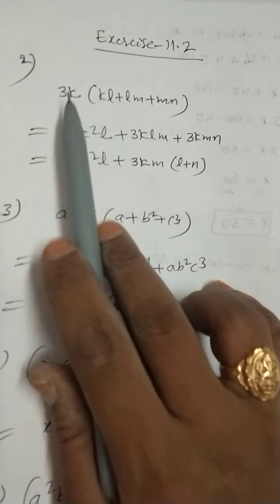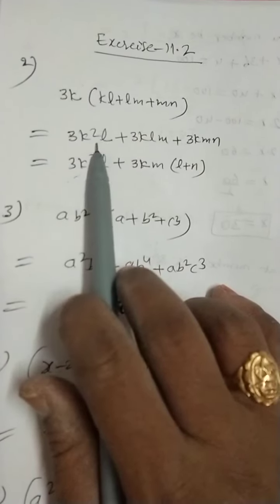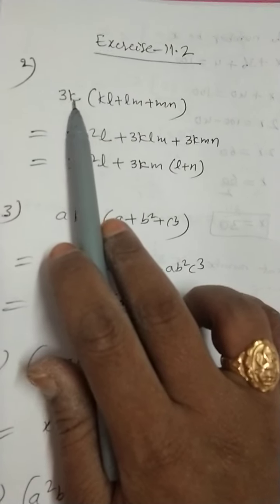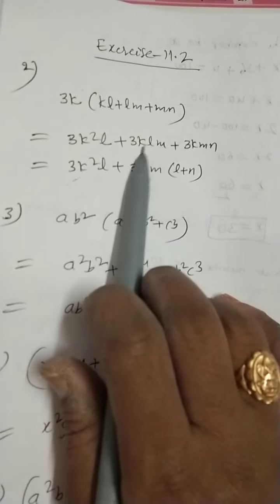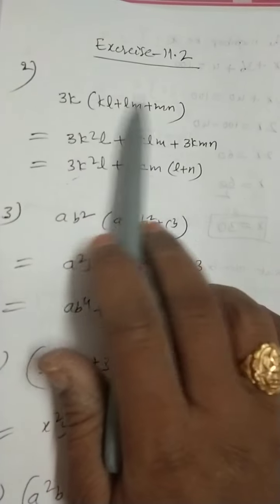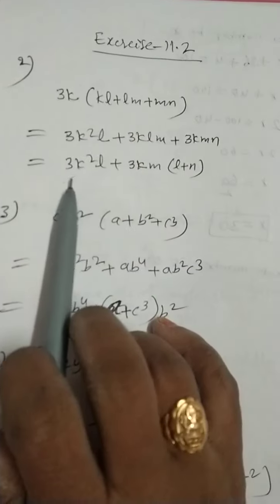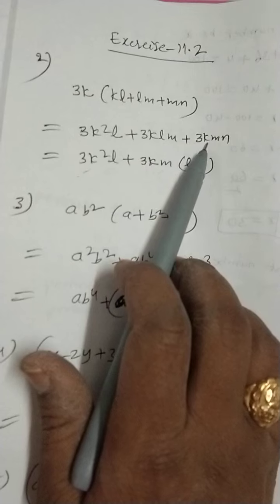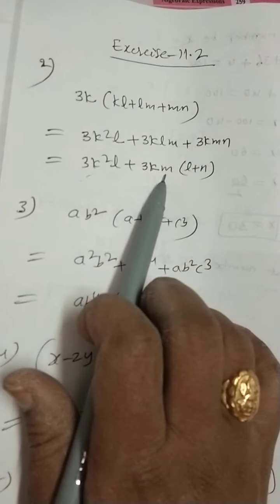3 as it is, k into k is k square, l. Plus, 3 into k into l into m is 3klm. Plus, 3 into k into mn. So 3k²l plus, in these two terms, if you observe, 3km is common.